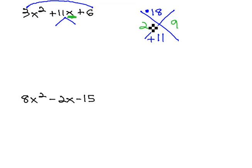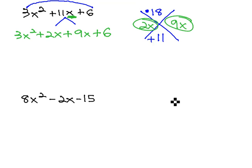Stick the variable on there, and we're gonna split the middle term up into 2x and 9x. We now have 3x² plus 2x plus 9x plus 6, and then we have an expression we can factor by grouping.